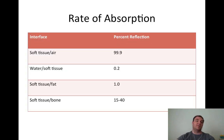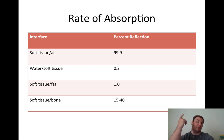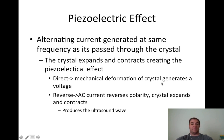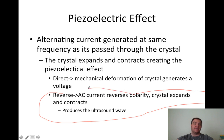Rate of absorption between soft tissue and air: 99.9% of the sound wave will be reflected. Water and soft tissue about 0.2%, fat to soft tissue about 1%. The piezoelectric effect: alternating current is generated at the same frequency as passed through the crystal - it contracts and expands. In the reverse piezoelectric effect, AC current reverses polarity, causing the crystal to expand and contract, which is what actually produces the ultrasound wave.